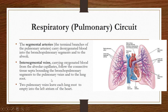The pulmonary veins are four in number — two on the right side and two on the left side — and they come at the lung root. From the lung root, the pulmonary veins empty into the left atrium of the heart, draining oxygenated blood into it. From the left atrium, blood goes into the left ventricle, and from the left ventricle the aorta carries oxygenated blood to all over the body.